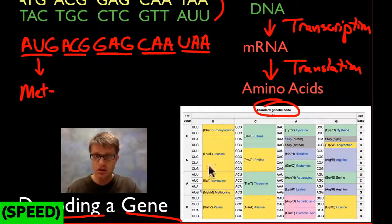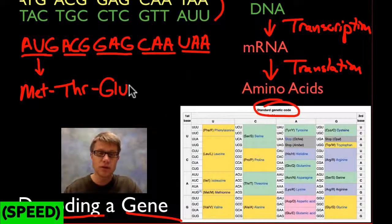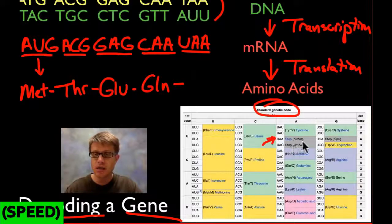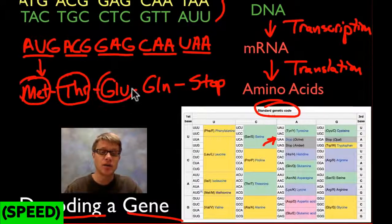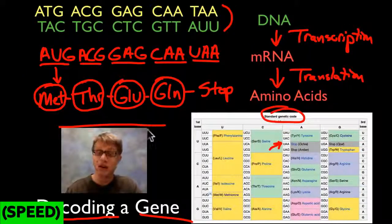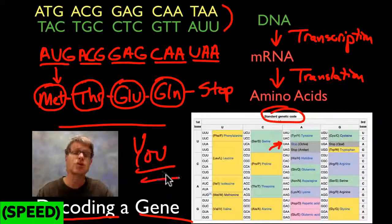The next codon, GAG, is glutamic acid. Then CAA is glutamine. The final codon, UAA, is a stop sequence — that's the end of the gene, so it doesn't code for an amino acid; instead it inserts a release factor so the whole thing can break apart. So we have four amino acids: methionine, threonine, glutamic acid, and glutamine. This whole chain is called a polypeptide, and it would fold into a specific protein to do a specific job. This is how DNA becomes messenger RNA, amino acids form proteins, and proteins eventually make you. That's transcription and translation.